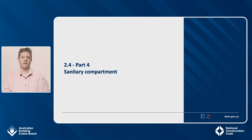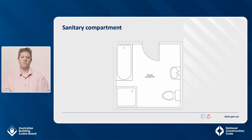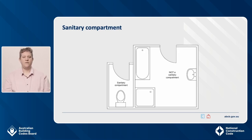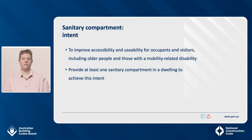Let's look at Part 4 of the standard, which covers sanitary compartments. Before outlining the provisions, it's important to clarify the term 'sanitary compartment'. Sanitary compartment is an NCC defined term and means a room or space containing a closet pan or urinal. In the first figure, the room is a sanitary compartment because it contains the closet pan. In the second figure, the room containing the bath is not a sanitary compartment as it does not contain a closet pan or urinal. The sanitary compartment requirements in Part 4 of the standard are intended to improve their accessibility and usability by occupants and visitors, including older people and those with a mobility-related disability. Part 4 specifies the minimum requirements for the design and construction of at least one sanitary compartment in a dwelling to achieve this intent.